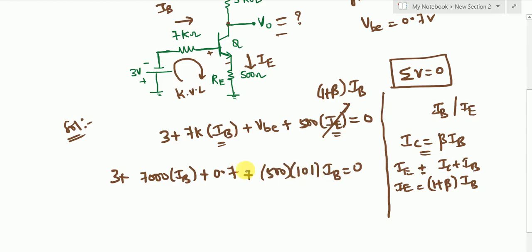Now no need to solve this equation because 7000 plus some value, you will get some multiple times of IB = -3.7. So now the current, the base current, is clearly negative. So this is the first observation that you should do.